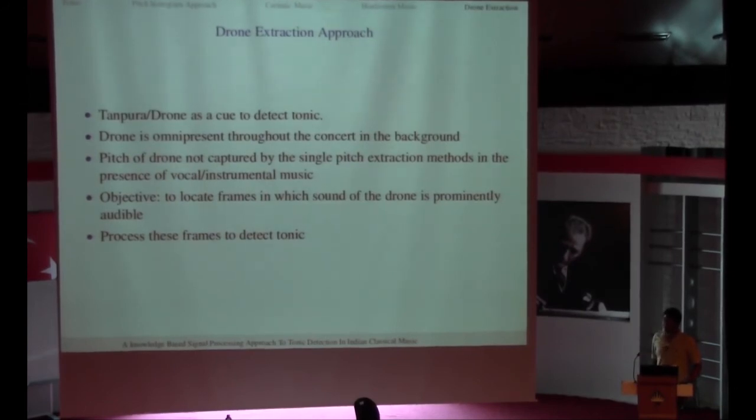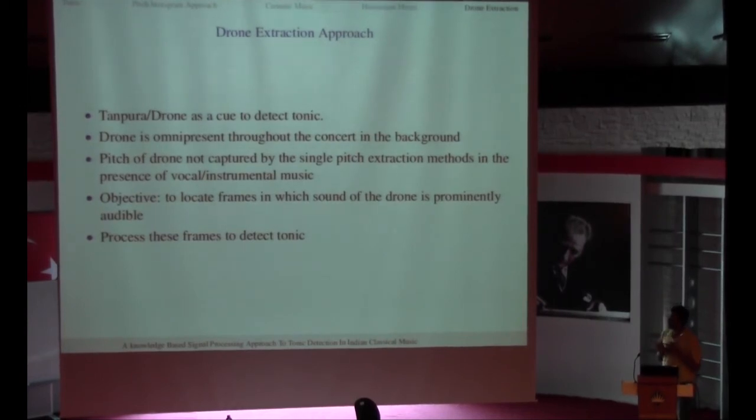These methods I talked about, you need the whole pitch of the whole piece. And sometimes the pieces will be half an hour, 45 minutes. So to estimate something like the tonic, sometimes it doesn't make sense to have so much data. And it would be good if I could do with lesser amount of data. So the obvious thing would be to process my drone to estimate my tonic. As I said, the drone is present throughout. But given that we had only single pitch extraction method, the drone was never shown in my pitch contours if it's not the most prominent sound. But the thing is when the musician pauses, the drone is heard. And the pitch contours register the pitch of the drone when the musician pauses.